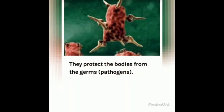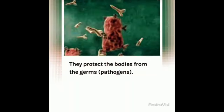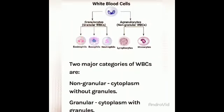We can divide white blood cells into two types: first is granulocytes and second is agranulocytes. Granulocytes are basically granular, meaning they bear granules, and agranulocytes do not have any granules — that is why they are called agranular or non-granular WBCs.